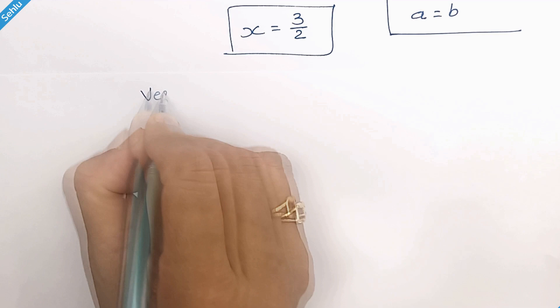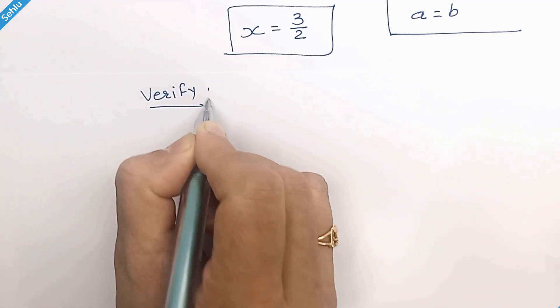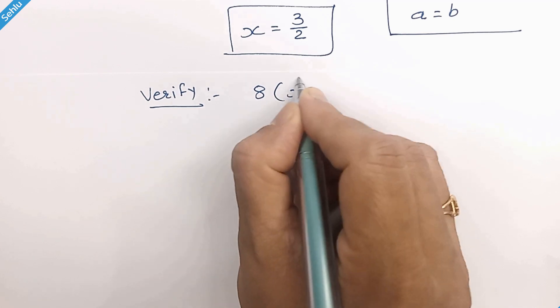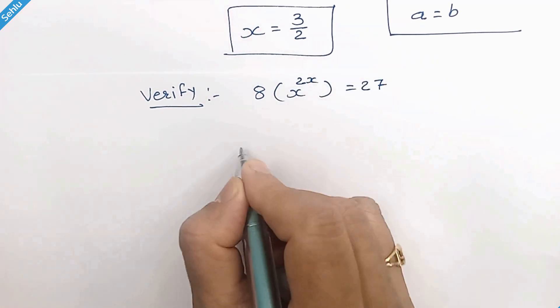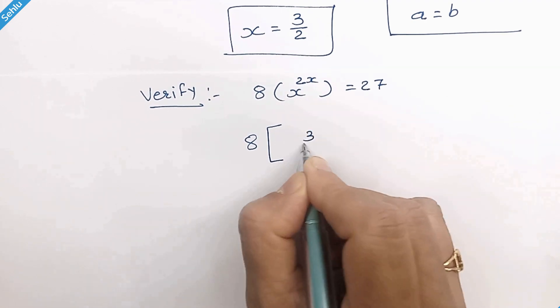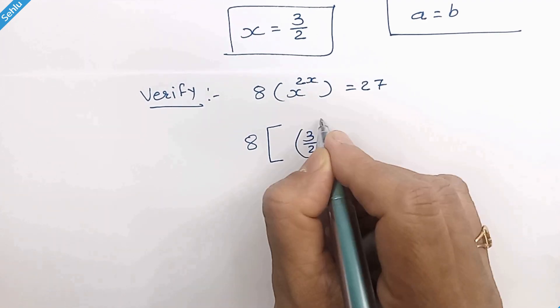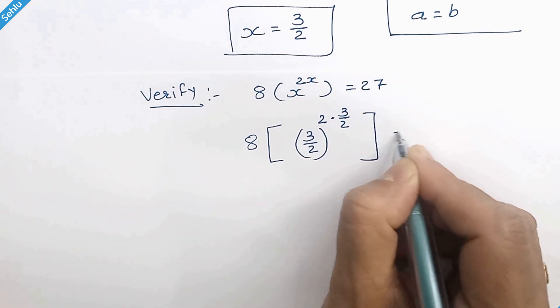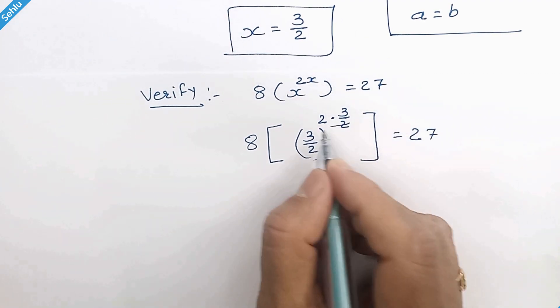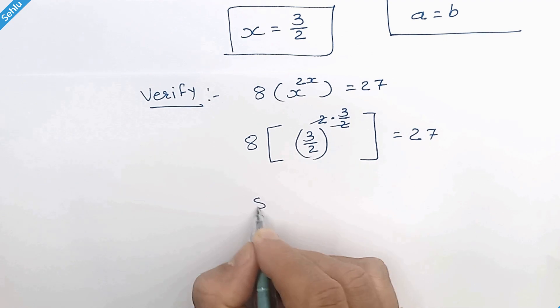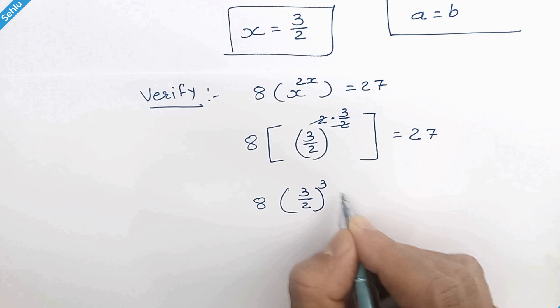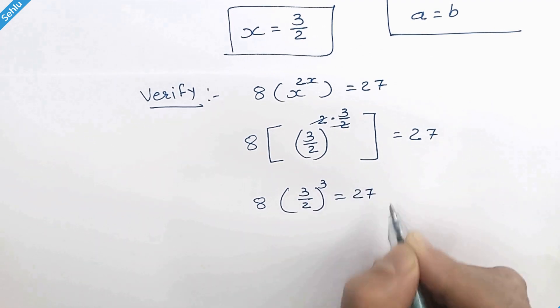Now let's verify this answer. Our given question is 8 times 3 over 2 whole to the power 2 times 3 over 2. So 8 times 3 over 2 whole to the power 3 is equal to 27.